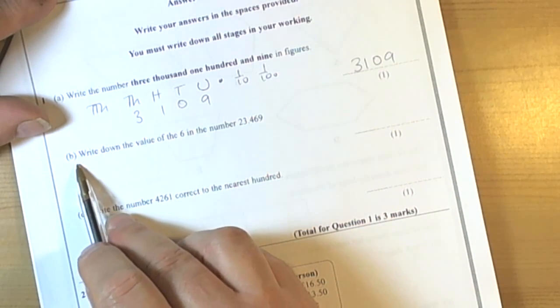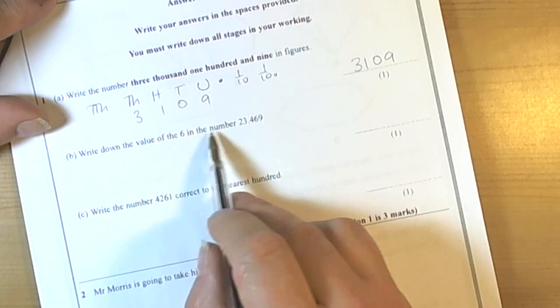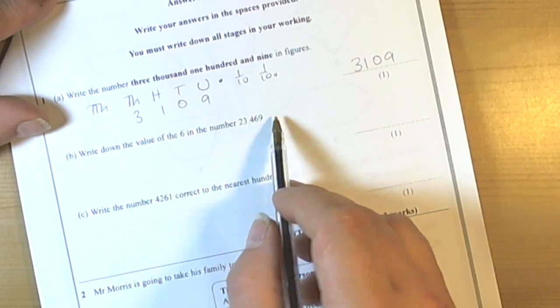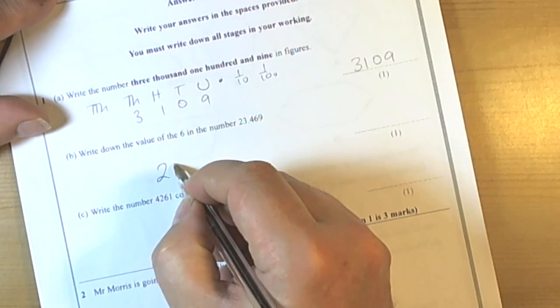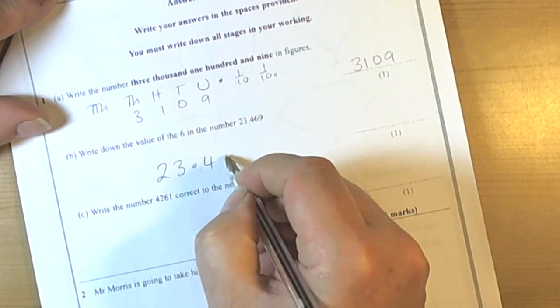Now the next part of the question is asking us to think about the value of the 6 in the number 23.469. So we've got 23.469.